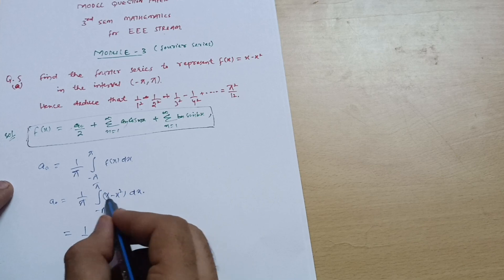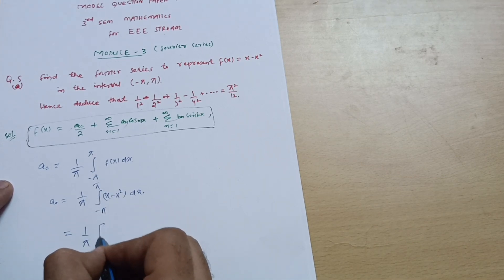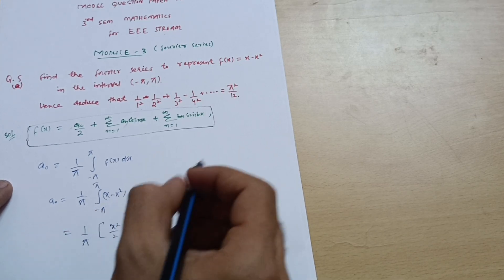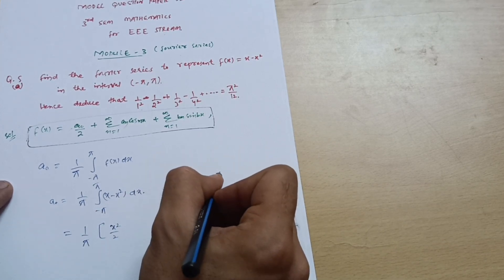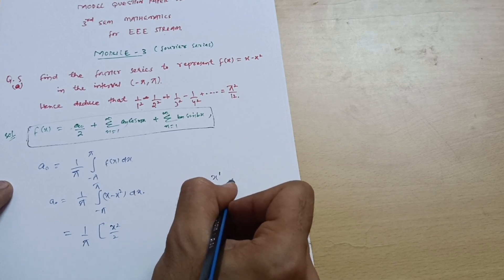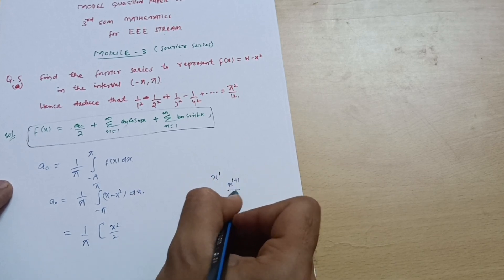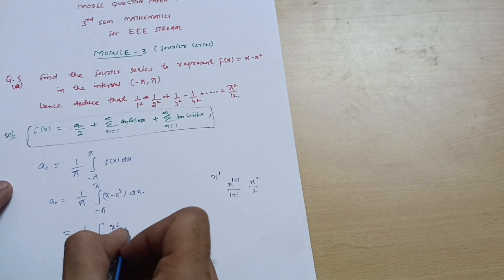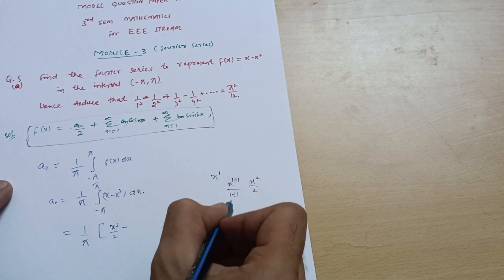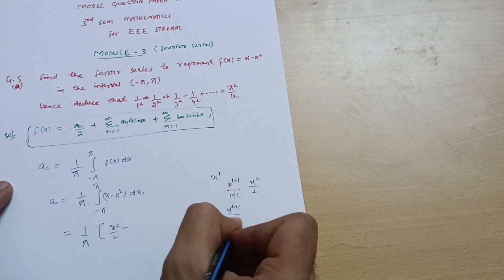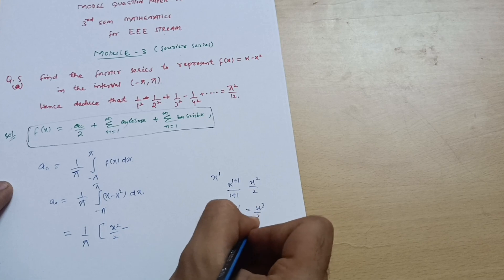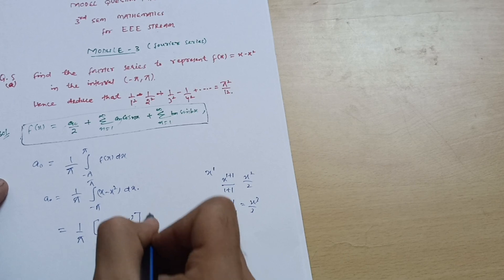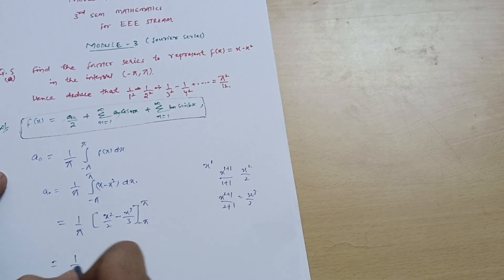The integration of x − x² is: the integral of x is x²/2, and the integral of x² is x³/3. So the result is x²/2 − x³/3, with limits from −π to π.